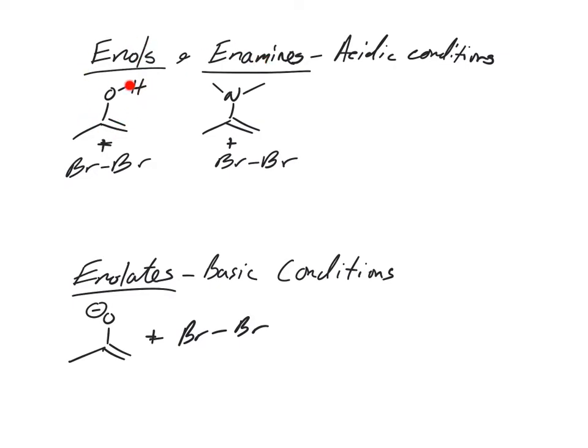Enols and enamines. Enol - en for alkene, ol. And enamine, which we've seen before. These are done in acidic conditions, right, so things with plus charges a lot of times.